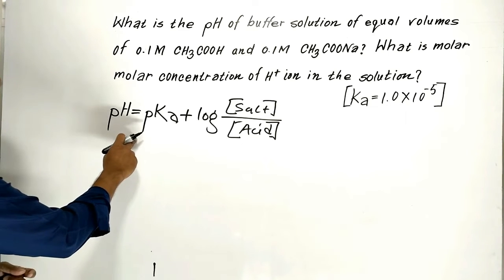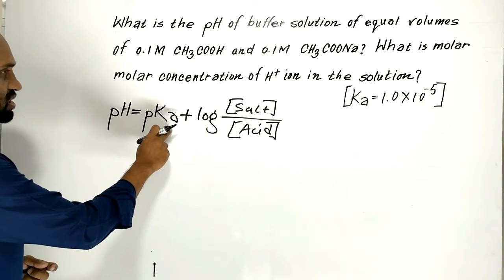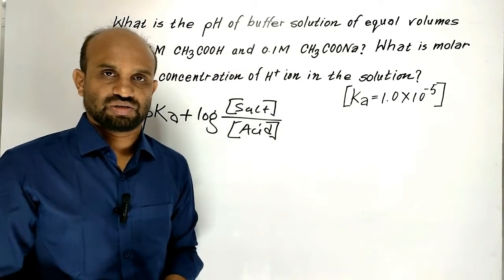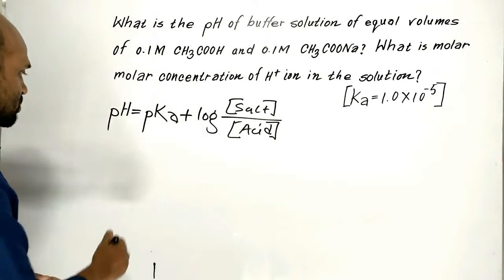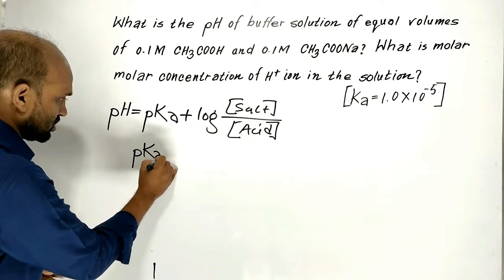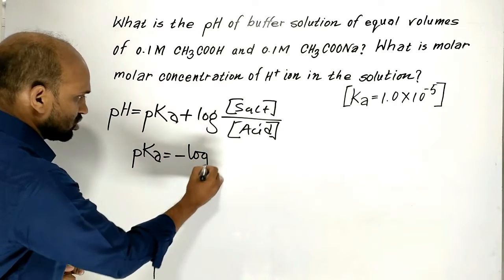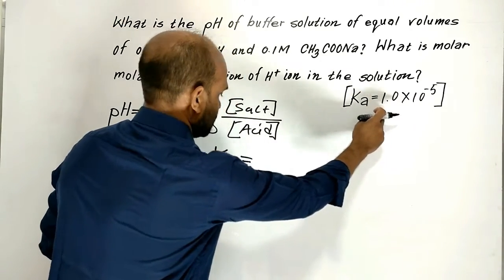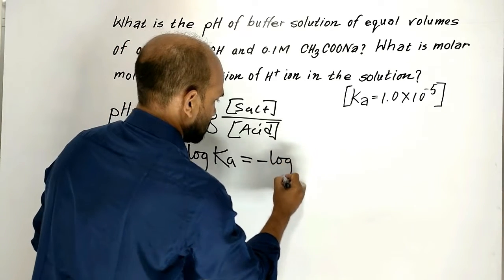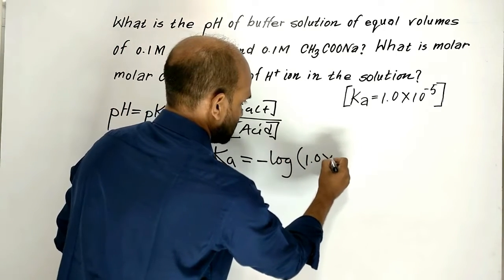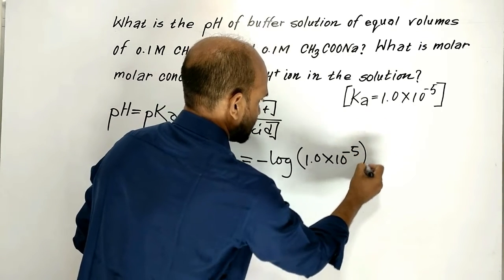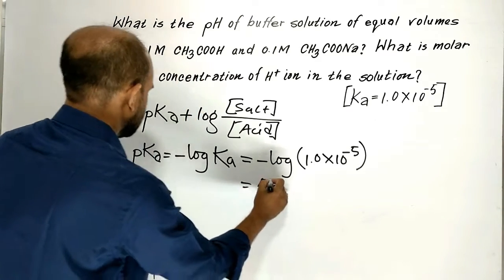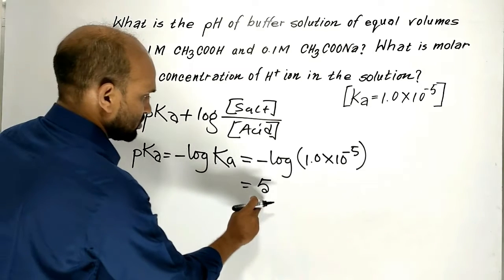We need to know the value of pKa. One additional piece of information has been provided: the value of Ka. We know pKa is equal to minus log of Ka, so pKa equals minus log of 1.0×10⁻⁵, which gives us pKa equal to 5.